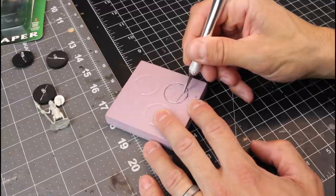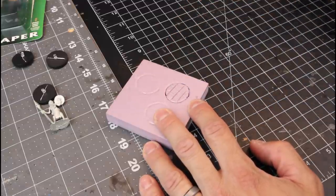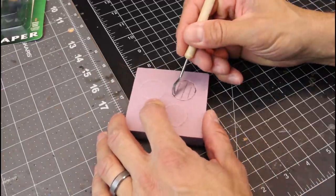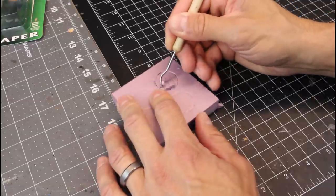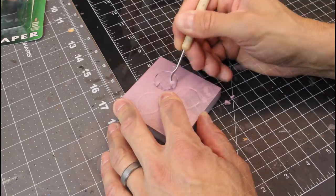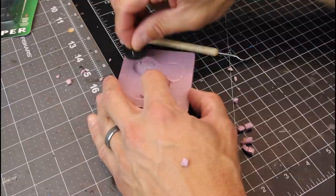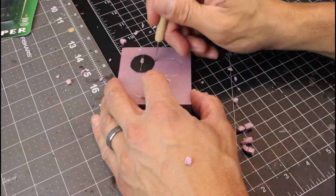So, I'm just using an exacto knife and I'm going down probably close to just shy of maybe a quarter of an inch into this base. Cut that out with an exacto. Use the clay sculpting tool as I do in a lot of my videos to carve out these little chunks.